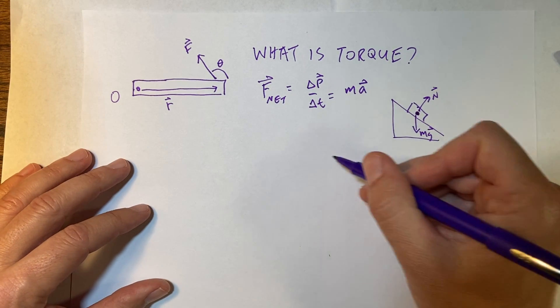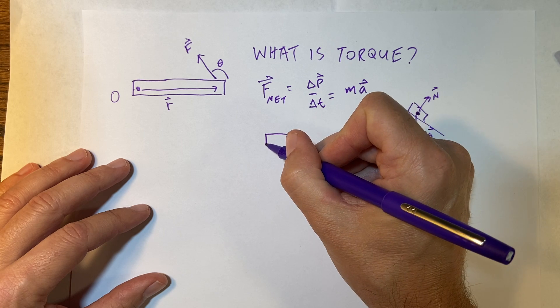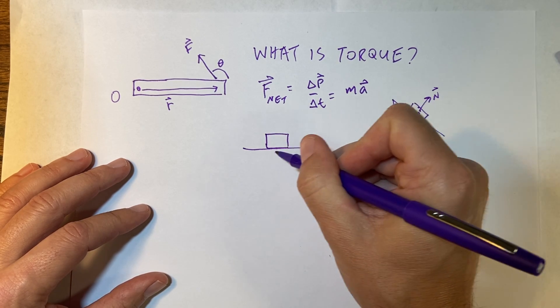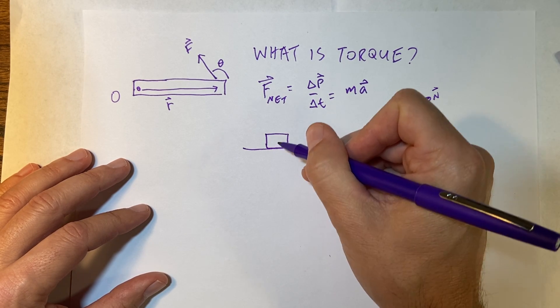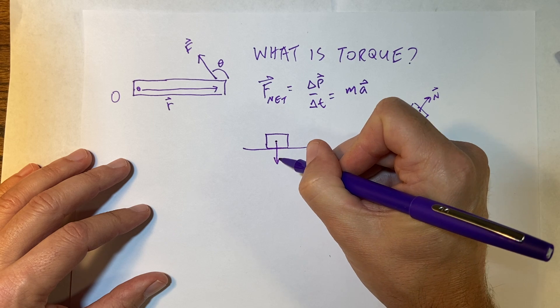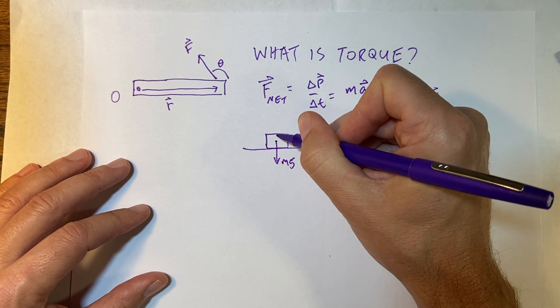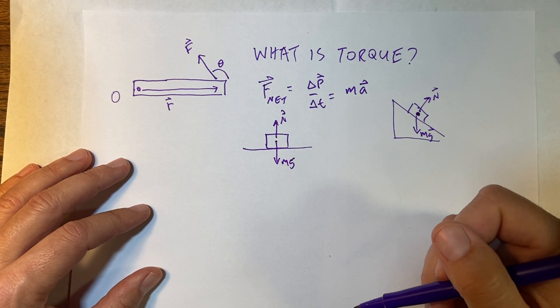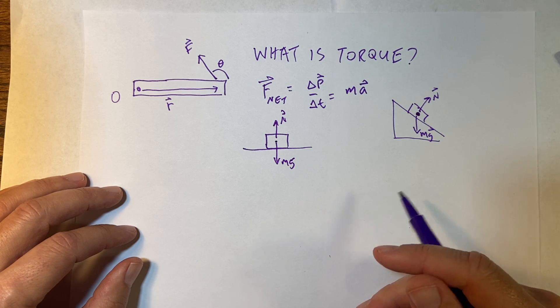Imagine this. So suppose I have a box sitting on a table. That's good enough. And so I have the downward gravitational force, I have the upward normal force, and those two forces are equal. So this is at equilibrium.